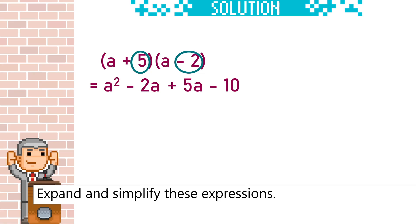Notice that we've got an a squared term, a number term, but we have 2a terms. So we can simplify it by collecting the like terms. We're going to do minus 2a plus 5a, which is plus 3a.